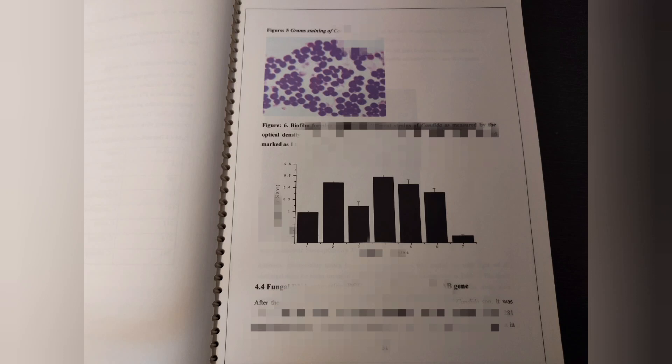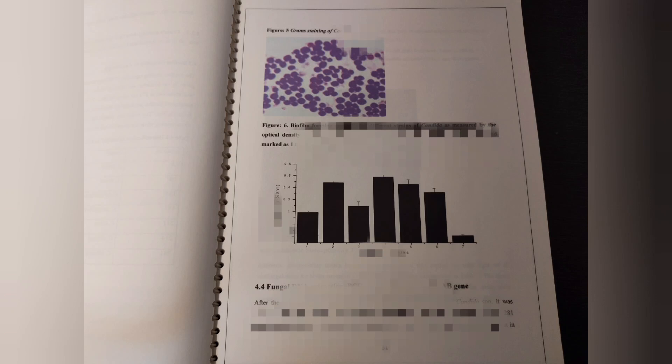For example, I included a picture of the plate on which I grew bacteria in my results. I also included a table with the table number and heading. You can include pictures, bar diagrams, and culture plate photographs in the results — it will make your thesis stand out. I also included pictures of antibiotic testing plates, showing the antibiotic sensitivity results.